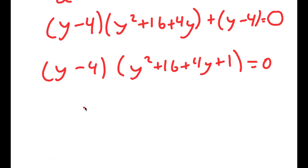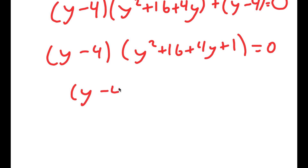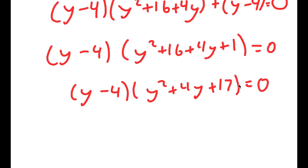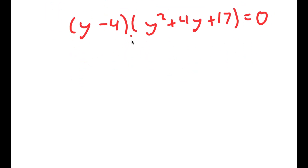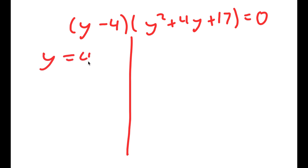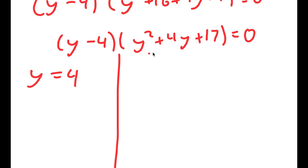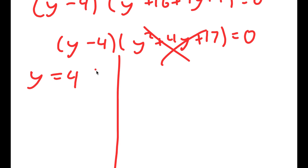This simplifies to (y minus 4)(y squared plus 4y plus 17) equals 0. This gives two equations: y minus 4 equals 0, so y equals 4; and y squared plus 4y plus 17 equals 0. Using the quadratic formula on the second equation gives the square root of a negative number, which is not real, so that solution is rejected. Therefore y equals 4 is the only solution.